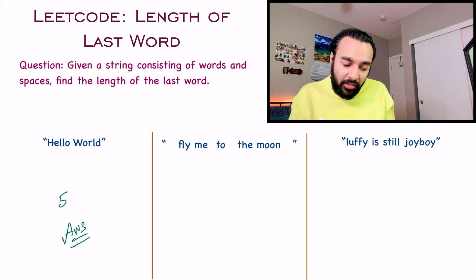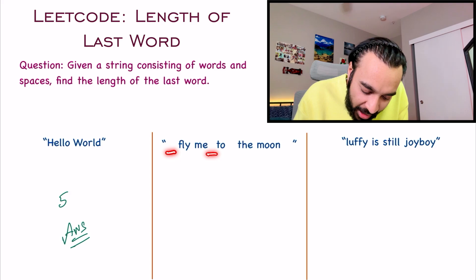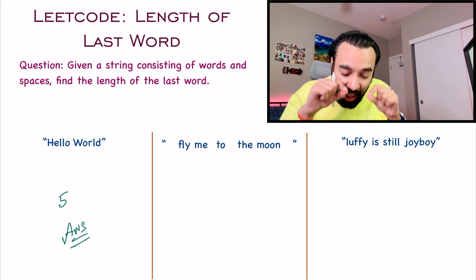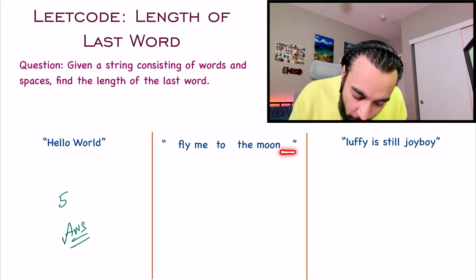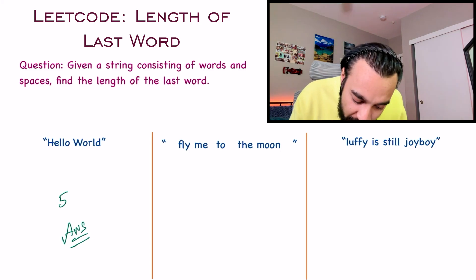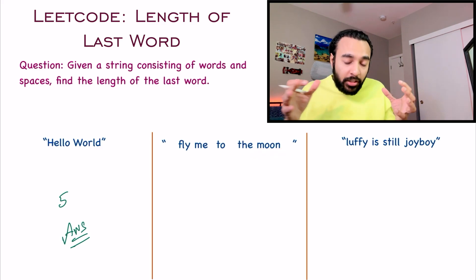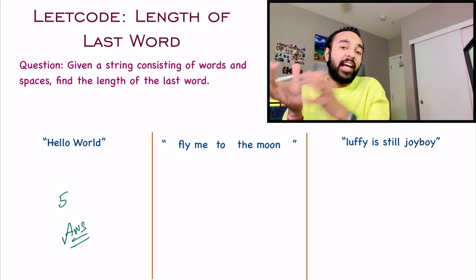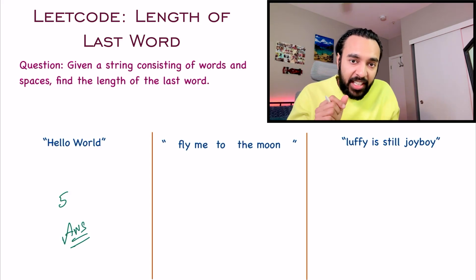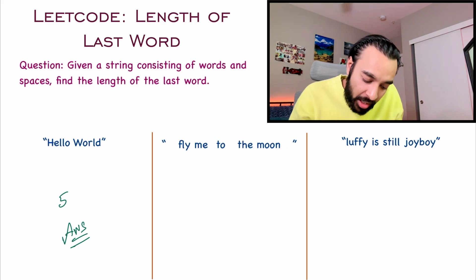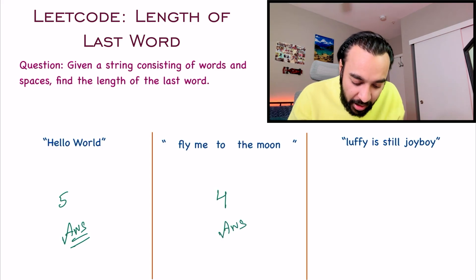To understand it even more, let us look at our second test case. You can see that we have a lot of uneven spaces all throughout the string. The last word will not be the space — the last word will be any word coming just before the trailing spaces. So what you have to do is just ignore the spaces at the very end and then try to find a word. In the second test case, the last word is "moon", and that has a length of 4. So for the second test case, 4 will be your answer.